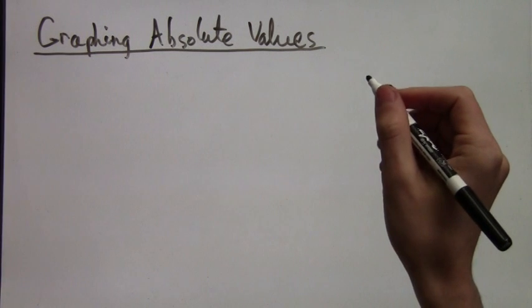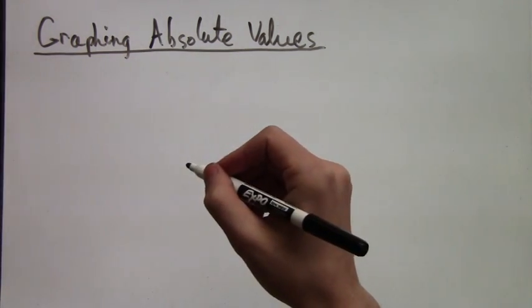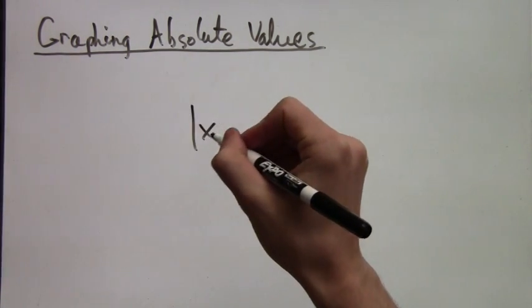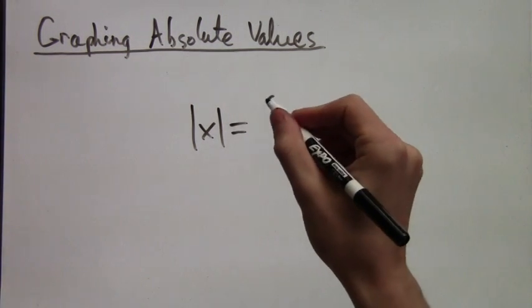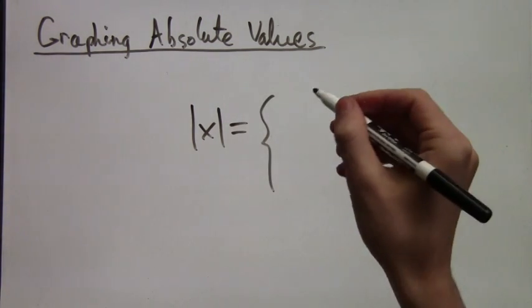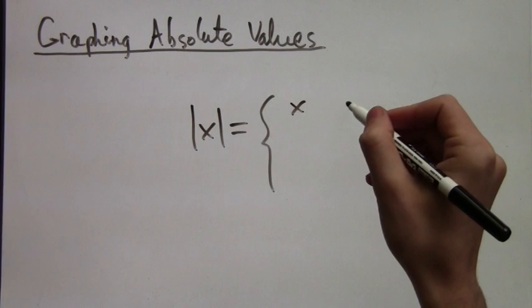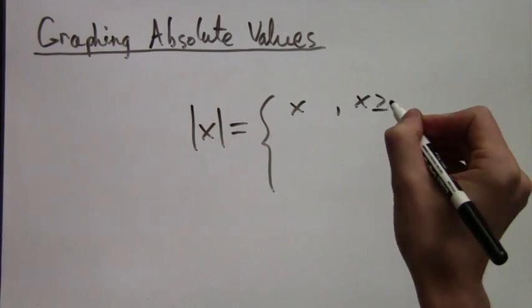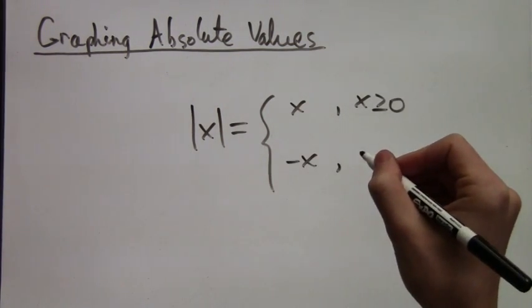But first, let's get a quick review of what the definition of the absolute value is. This will help us clarify. The absolute value of x is equal to x if x is greater than or equal to 0, or negative x if x is less than 0.